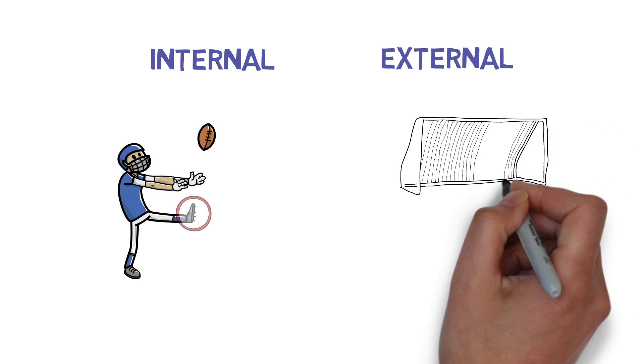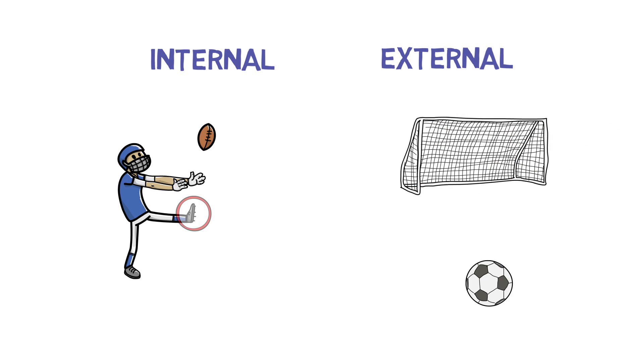External focus of attention refers to thinking about something outside of your body when executing a skill. For example, focusing on where you want to kick the ball when shooting for goal.